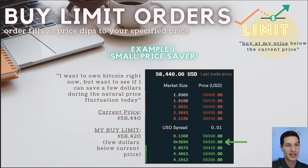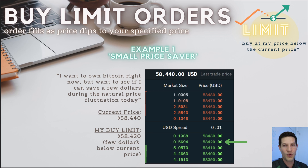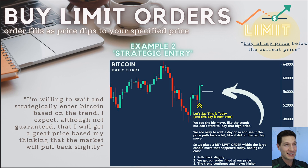The first example I call the small price saver. I want to own Bitcoin now, but I want to see if I can just save a few dollars during natural price fluctuation. The current price here is $58,440. I want to put a limit order in below the current price to try to get a better price, maybe at $58,420. I'm not trying to be super strategic — it's really about getting a little bit better price. The risk is that Bitcoin may continue to rise and may never hit your limit order.